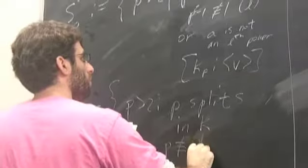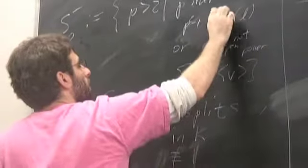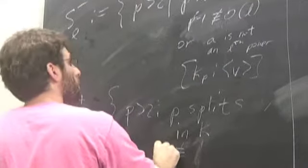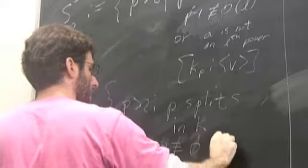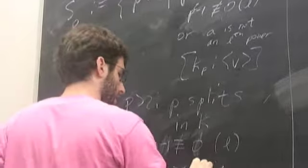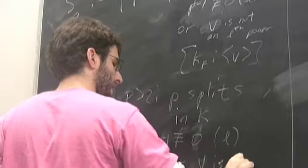P is not congruent to P sorry should be a zero P minus one is not congruent to zero mod L or A is not enough V is not an L power